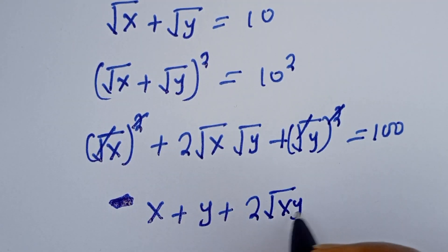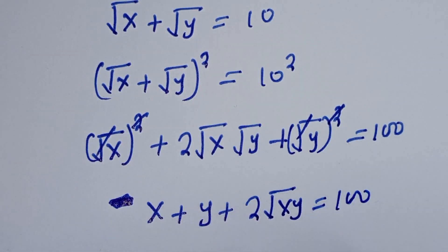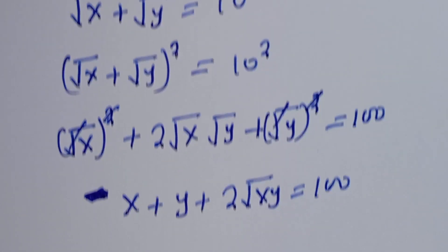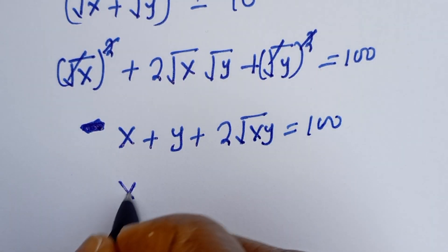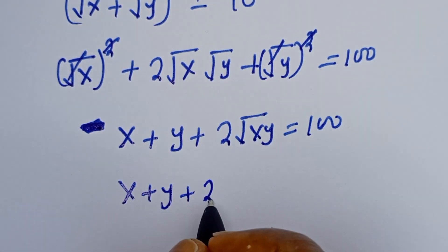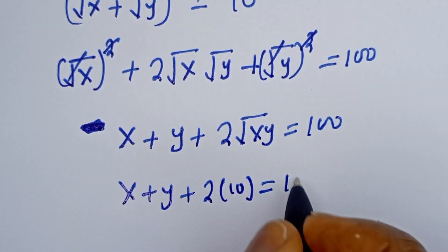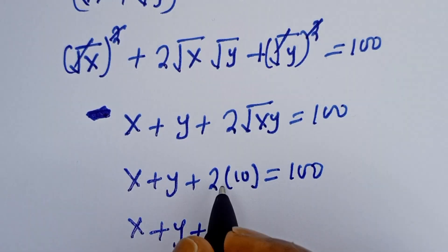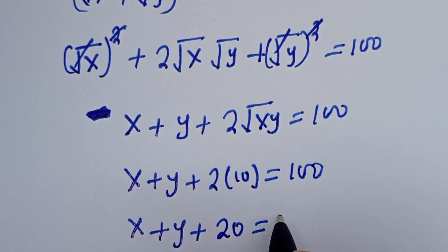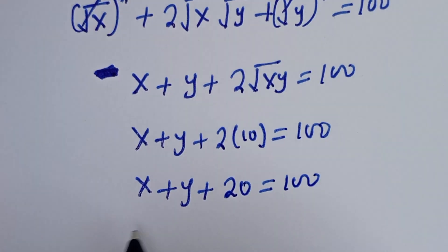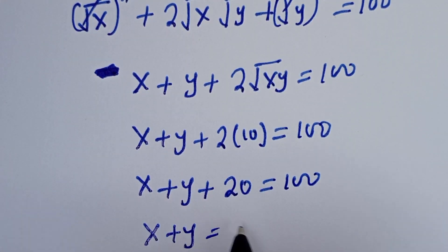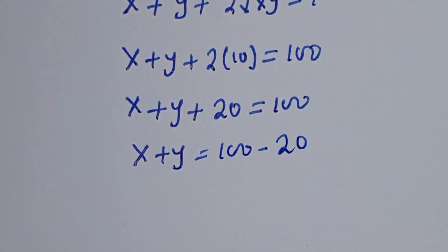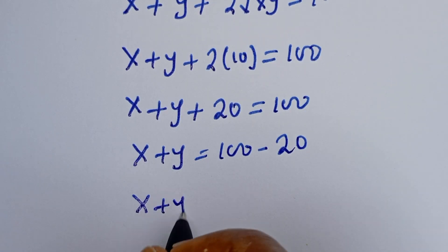Continuing: x plus y plus 2 times square root of xy is equal to 100. From equation 2, square root of xy is equal to 10, so we substitute: x plus y plus 2 times 10 is equal to 100. That gives x plus y plus 20 is equal to 100, so x plus y is equal to 100 minus 20, which means x plus y is equal to 80.